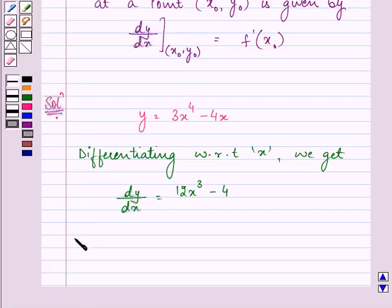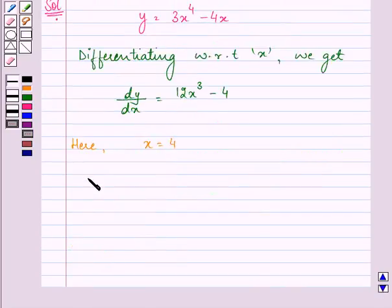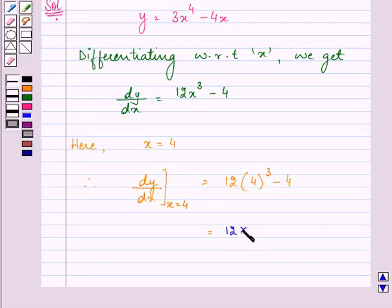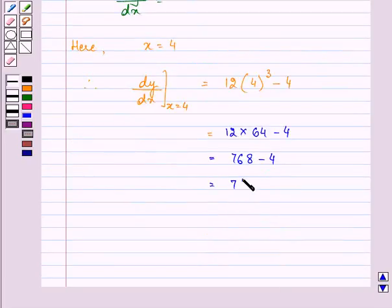Now here, we are given that x equals 4, right? So therefore, dy/dx at x equals 4 equals 12(4³) minus 4, which is further equal to 12 into 64 minus 4, that is 768 minus 4, giving us the difference as 764.